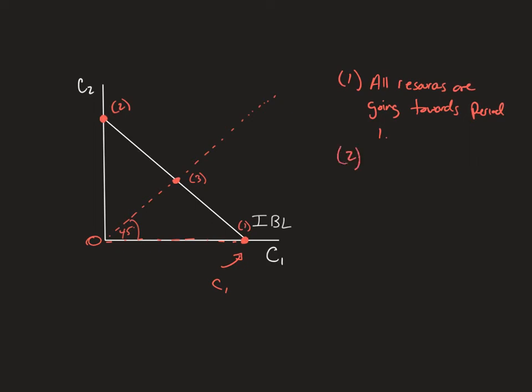Point two is going to be the opposite, where all is going to period two, meaning we are going to be saving everything. This is C2. And again, if I come down to my horizontal axis, that would be a zero. And so what we notice is everything's going to period two. So we're saving everything, not consuming anything right now. Now, these two points are pretty much irrelevant. We need to have individuals consuming something in the future or something in the current period. They need to consume something in period one and something in period two, or else they would die. We have to consume food at the very least. So we are interested in places that are in the middle somewhere.